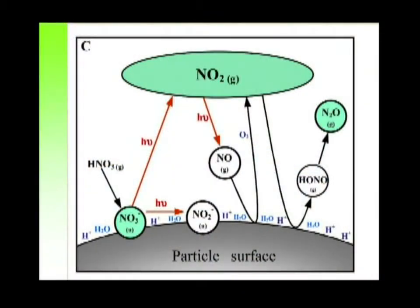For example, under dry conditions, nitrogen dioxide is the sole gas phase product, whereas under humid conditions, nitrous oxide is also formed. Interestingly, the formation of nitrous oxide — an important greenhouse gas — increases as a function of relative humidity, which can be explained by heterogeneous hydrolysis of nitrogen dioxide. Here, we observe surface-mediated secondary reactions of primary gas phase products.